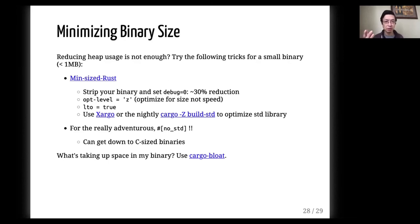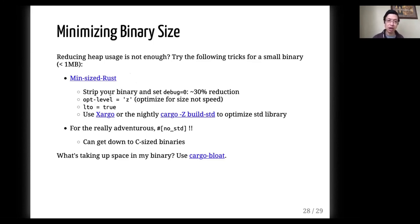You might be thinking: reducing heap allocation is great, but I want to make my binary smaller too. You should check out the `cargo-bloat` crate, which will analyze your Rust binaries and figure out where your space is being used. There are tons of ways to reduce binary size — you can get well below megabyte-sized binaries. There is a blog that covers many techniques including stripping, reducing debug info, and optimizing for size instead of speed. If you really want to remove the standard library, that's a way to get down to extremely small C-sized binaries, but be warned that has a lot of trade-offs.